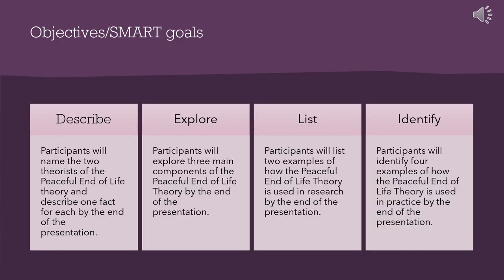We have four objectives and SMART goals. First, participants will name the two theorists of the Peaceful End-of-Life Theory and describe one fact for each by the end of the presentation. Second, participants will explore three main components of the theory. Third, participants will list two examples of how the theory is used in research. Fourth, participants will identify four examples of how the theory is used in practice.